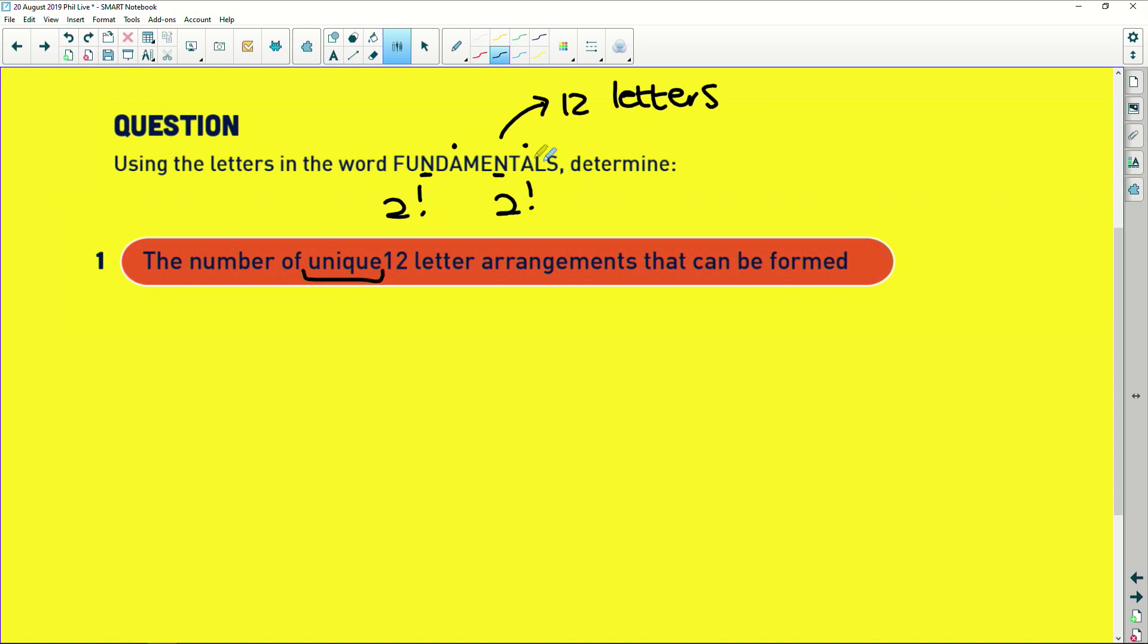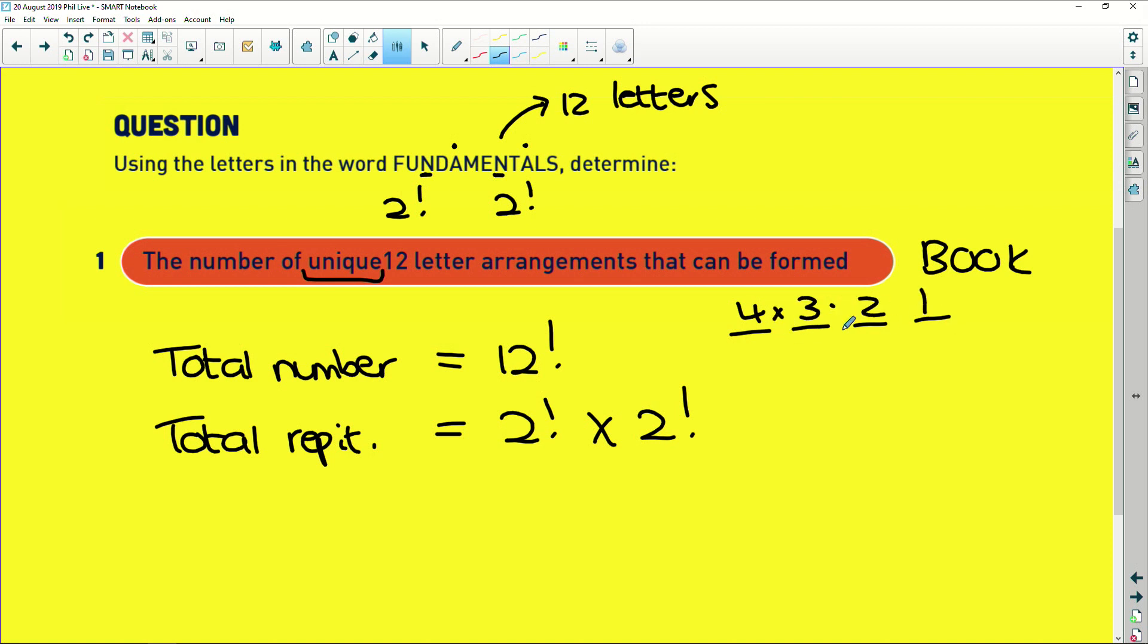Which means that there are two factorial for the N's and two factorial for the A's repetitions, possible repetitions, if we rearrange all of these letters. So first we need to find the total number of any rearrangements. So regardless of if you're going to have repetitions or not. So remember the total number is going to be 12 factorial, which is going to be an absolutely massive number. So total repetitions is going to be two factorial multiplied by two factorial. So that's going to give us two factorial is two, multiplied by two is four. So that's the number of repetitions.